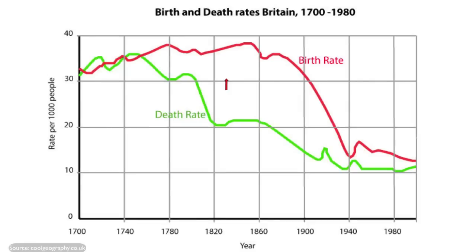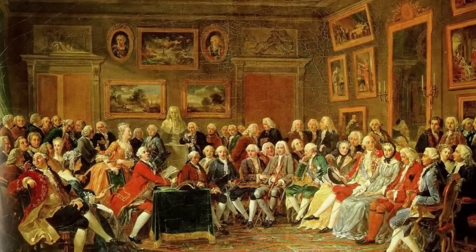Birth rates still outstripped death rates despite these problems. But there was another development: the age of reason, often called the Enlightenment. Thinkers and scientists across Europe developed ideas about social justice, poverty relief and sanitation. In short, these people believed in progress, or the improvement of living conditions for all.